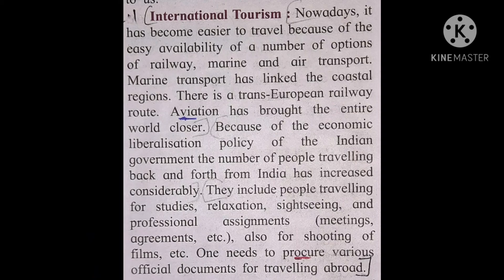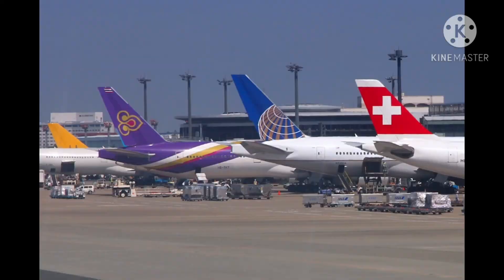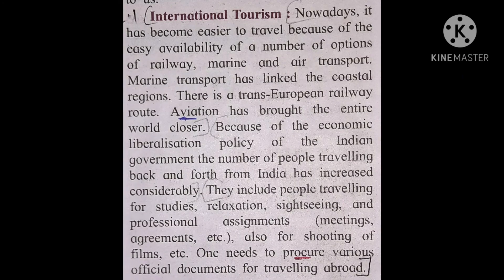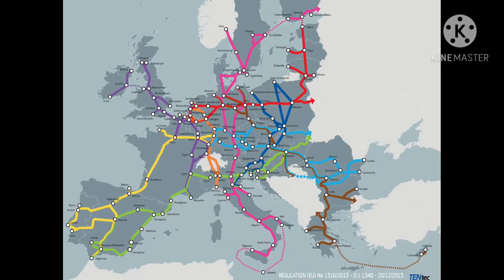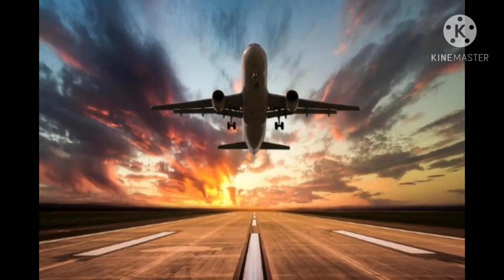The next type is international tourism. Because of the availability of transport facilities like railway, marine, and air transport, tourism has become easy nowadays. There is a trans-European railway route, and aviation has now brought the entire world closer to us.